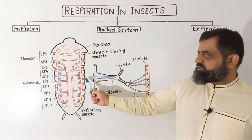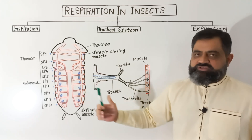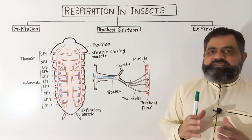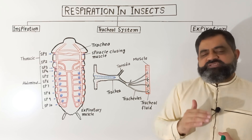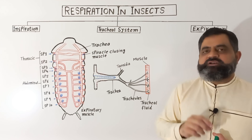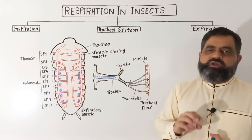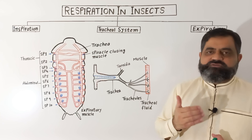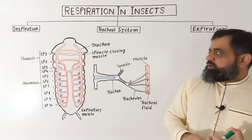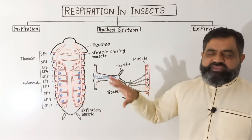These tracheal trunks give rise to tracheae, which are connected with each other from both sides with the help of commissure tracheae. These tracheae then branch into smaller tubes which are known as tracheoles. At the end, the tracheoles are blind-ended and they open into or penetrate into the tissues of the body — such as the muscles of the wings, legs, or body muscles.